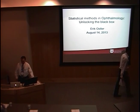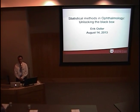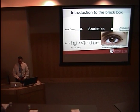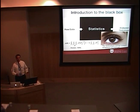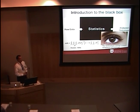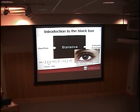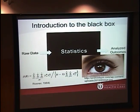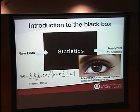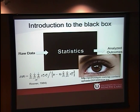My name is Eric Osler and my talk today is entitled 'Statistical Methods in Ophthalmology: Unlocking the Black Box.' In ophthalmology, data analysis is often like a black box — we present raw data to a statistician and receive analyzed outcomes without asking questions. This can cause systematic problems, as statisticians focus on statistical theory while clinicians focus on the eye, with very little overlap. If the statistician overlooks subtleties in ophthalmologic data, mistakes go uncaught.